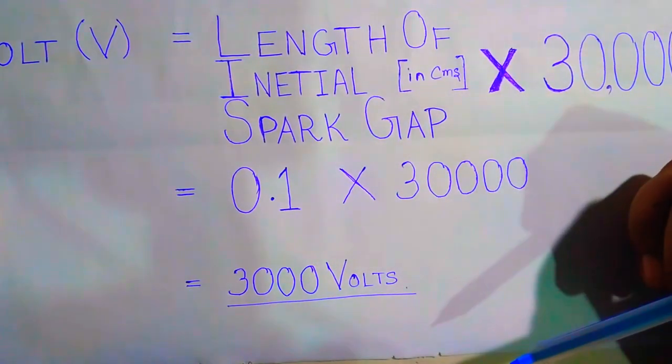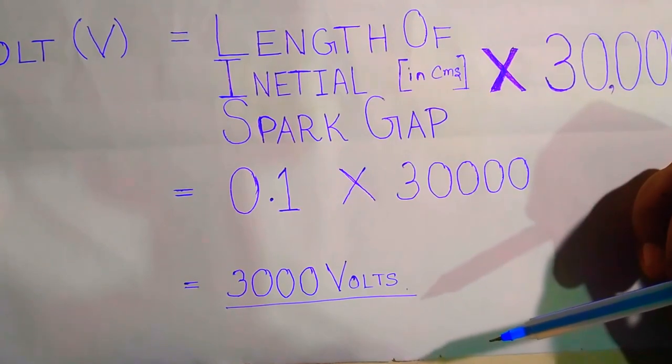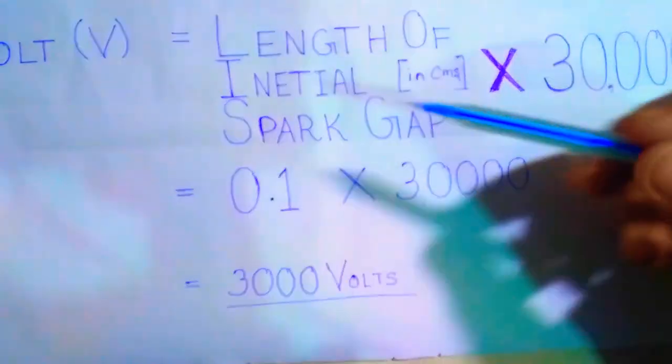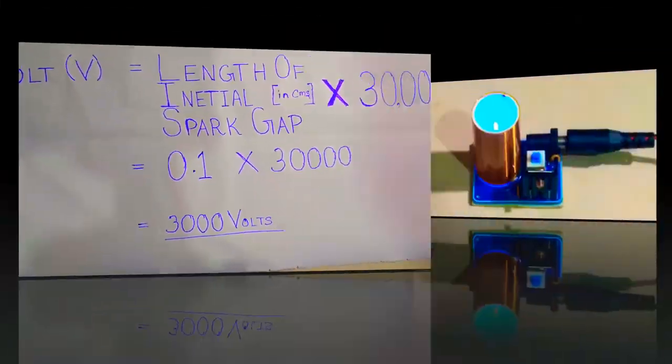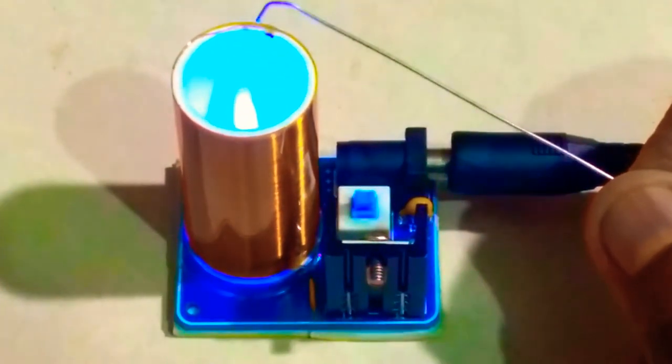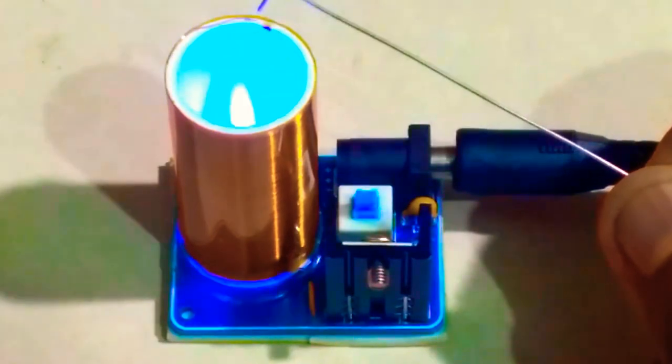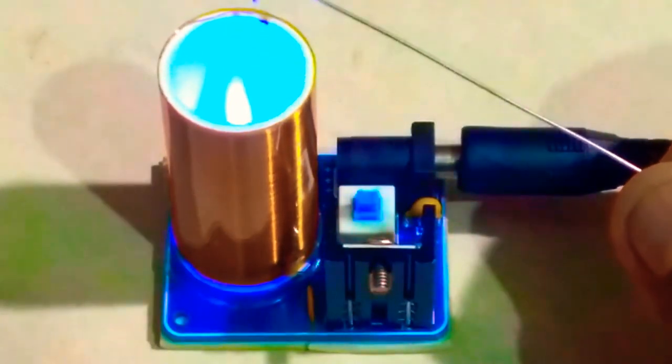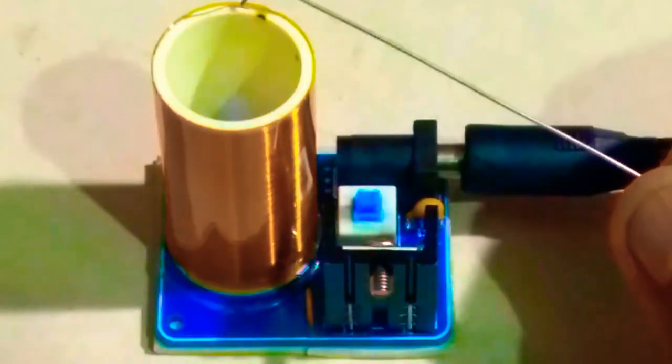As from the experiment we found it to be 0.1 centimeters which on calculation gives 3000 volts, which is pretty impressive in case of this mini Tesla coil. Since I'm able to touch the sparks through a conductor, the frequency of these sparks is well over 20,000 Hertz.